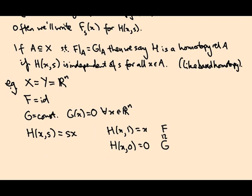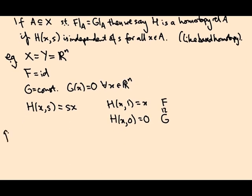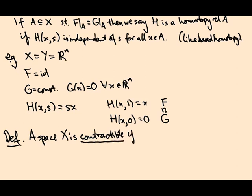So for R^n we've just seen the identity map is homotopic to the constant map. Now that's quite an unusual occurrence. So it's got a name. The space X is called contractible if the identity on X is homotopic to a constant map.